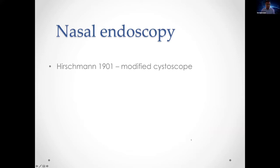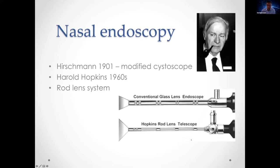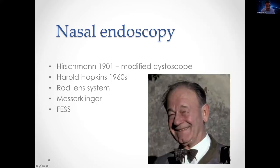A quick history of nasal endoscopy: the first recorded attempt at looking up the nose with an endoscope was by Hirschman in the early part of last century, using a modified cystoscope. Technology wasn't great until Harold Hopkins invented his rod lens system, providing much better illumination and clarity. Walter Messerklinger is regarded as the father of endoscopic sinus surgery, the first to use that technology to study sinus physiology and anatomy.